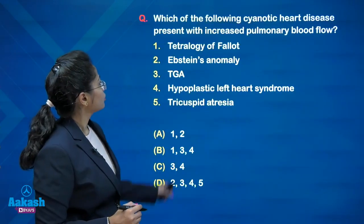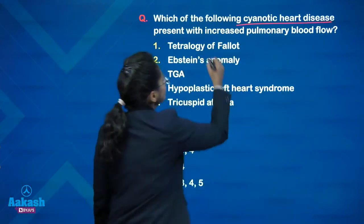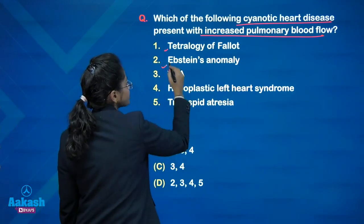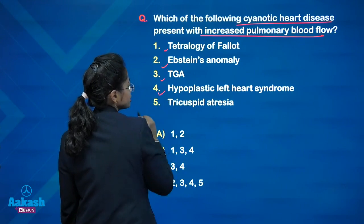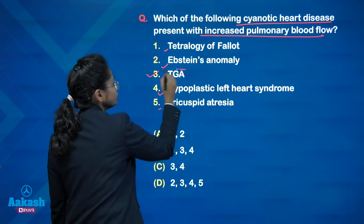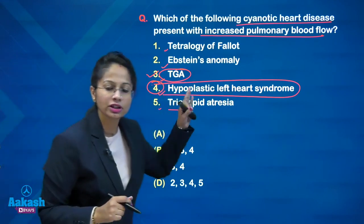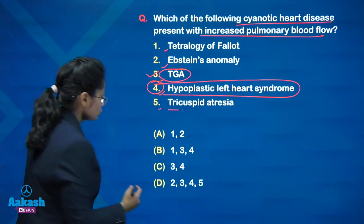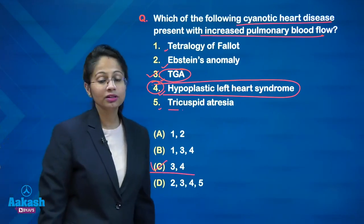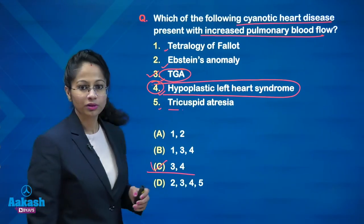Coming back to the question, the cyanotic heart diseases associated with increased pulmonary blood flow from the given options are option 3 — TGA — and option 4 — hypoplastic left heart syndrome. The correct answer is C. Pediatric cardiology is very, very important — questions will always be asked from this topic, so you cannot leave it.